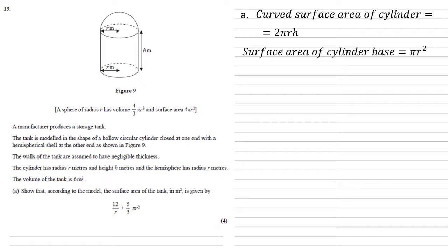And we're given that the surface area of the sphere is 4πr², so the surface area of the hemisphere must be 2πr². Adding all these together, we get that the total surface area is 3πr² + 2πrh.